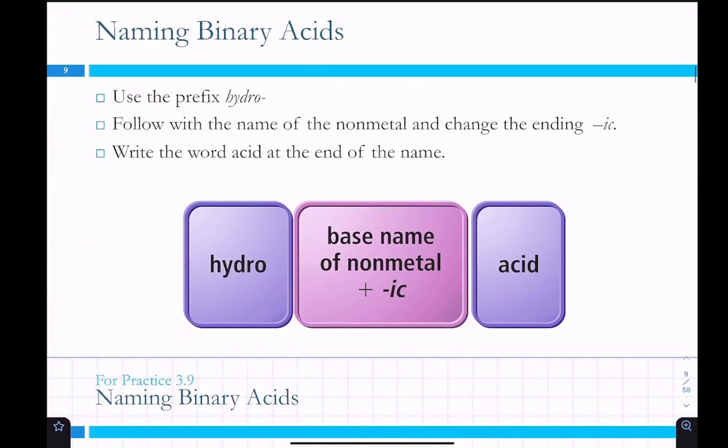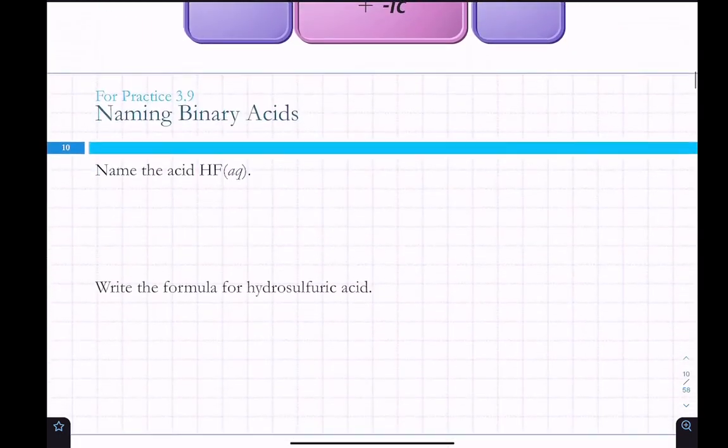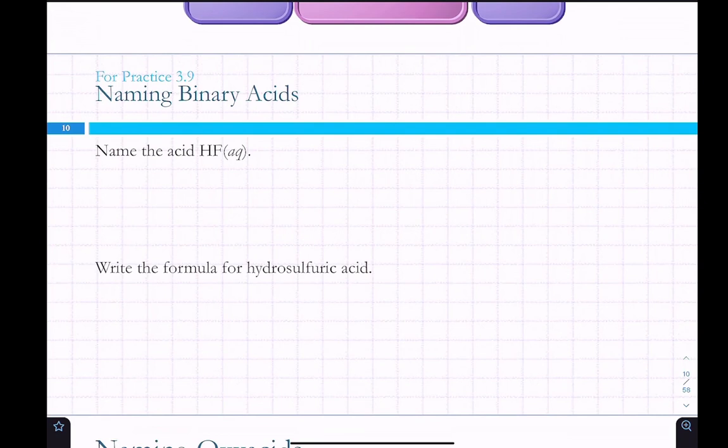Binary acids are nice and easy to name. You add a prefix of hydro. And then, you follow with the name of the nonmetal, and you change the ending to IC. And then, write the word acid at the end of the name. And there's a space in there. So, HF. Yep, prefix of hydro. And then, we go fluoric. So, we added that prefix, we add a suffix. And then, acid.